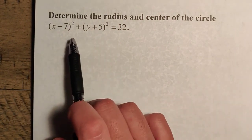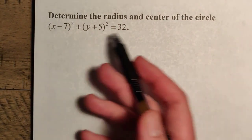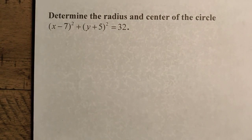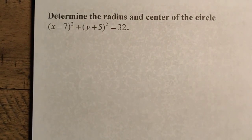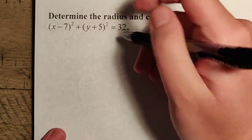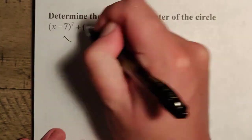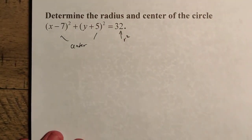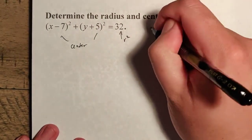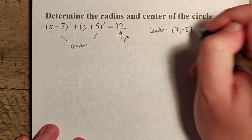For something like this, if we want to find the radius and center of this particular circle with this equation, we recall that the two most important pieces of information are already encoded in here. This is our radius squared, and this is the center. The center is going to be the reverse of the coordinates here, so the center is going to be at (7, -5).